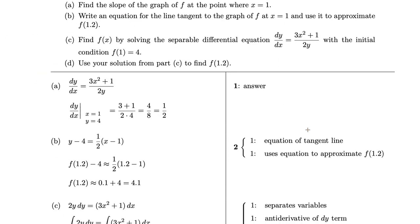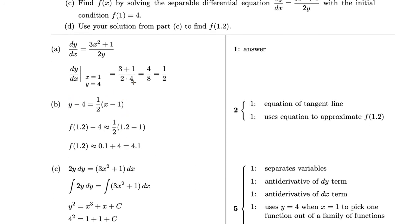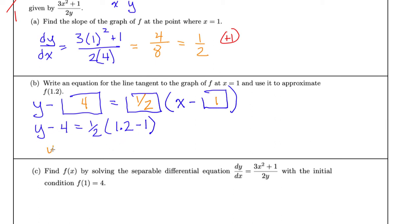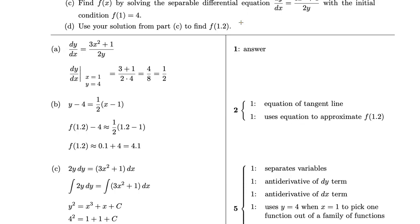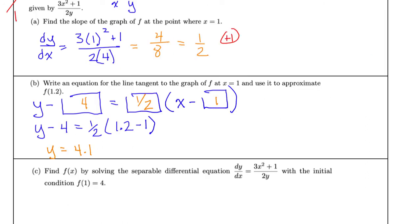Now we're going to use that equation. I write down y minus 4 equals one half times (1.2 minus 1). So 1.2 minus 1 is 0.2, and half of 0.2 is 0.1, and adding 4 to both sides gives y equals 4.1. So my answer is y equals 4.1. You get a point if you use the tangent line to get 4.1. So plus 1 there and plus 1 for the equation — how many points out of 2 did you get for part B?